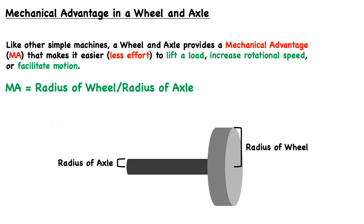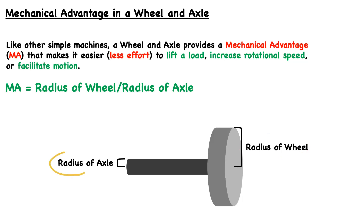For a wheel and axle system, the mechanical advantage is a ratio between the radius of the wheel and the radius of the axle. As illustrated, it is a ratio of the radius of the wheel to the radius of the axle. So the larger the wheel with respect to the axle, the greater the mechanical advantage.